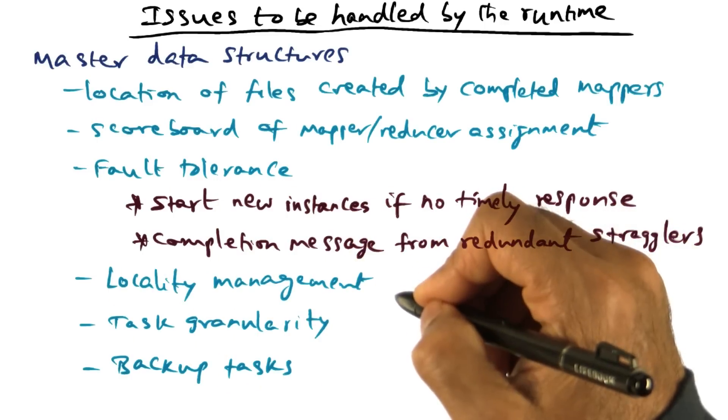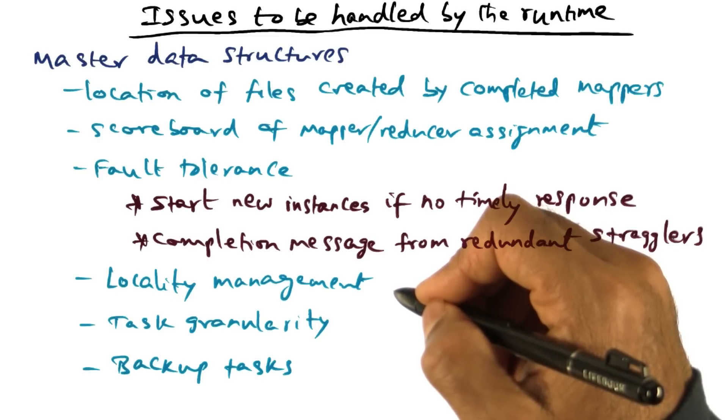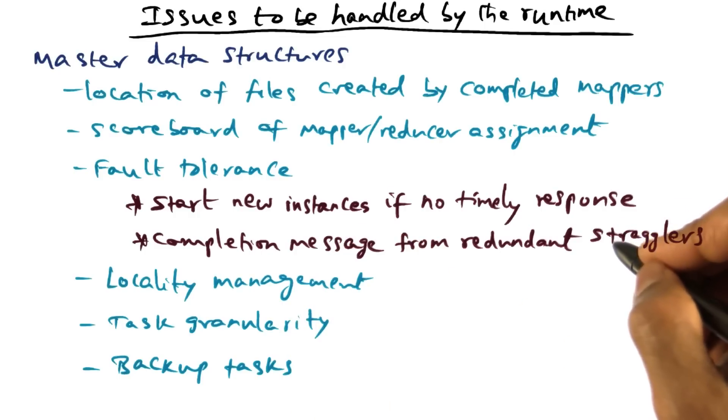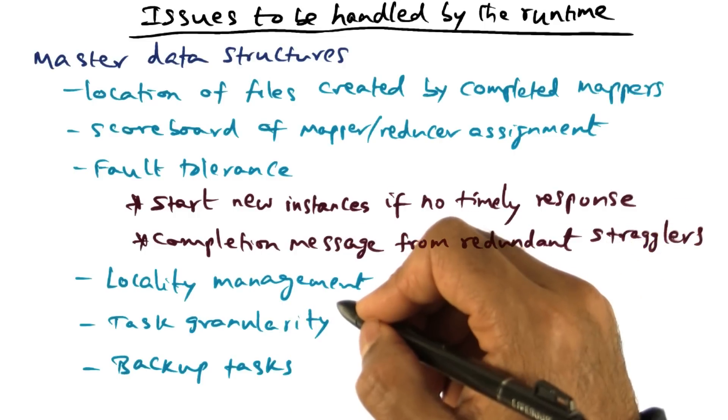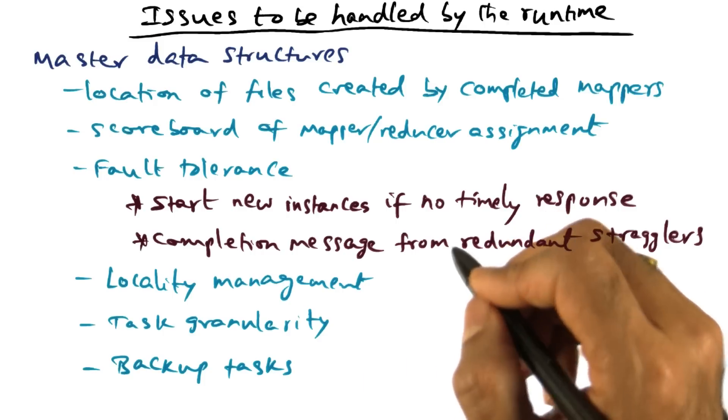Locality management is another important thing. In the memory hierarchy, making sure that the working set of computations fit in the closest level of the memory hierarchy of a processor is very important. And this is another thing that has to be managed very carefully so that the computation can make good forward progress in completing the MapReduce function.